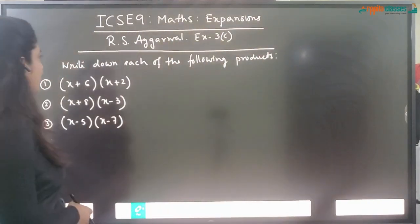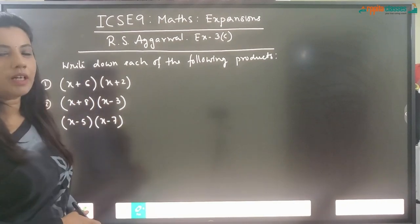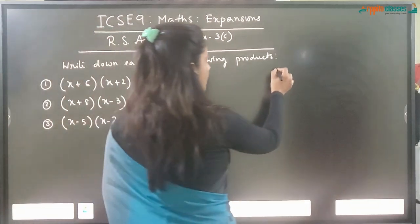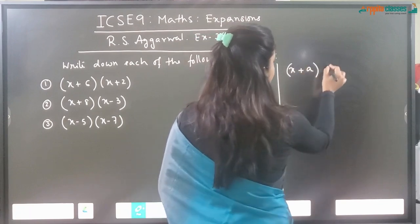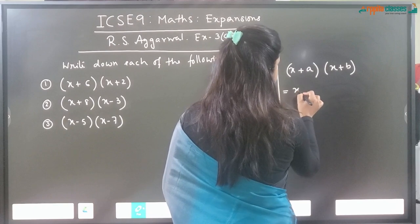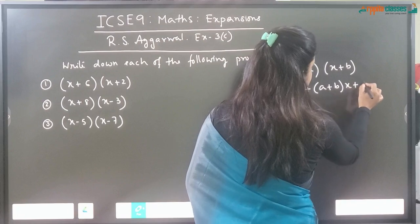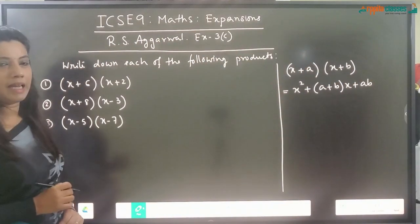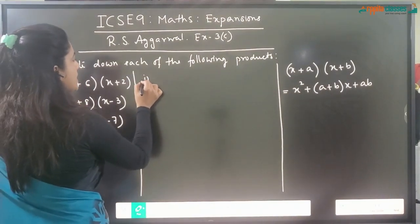Here we have to find out the products of two binomials. Let us first see the formula: when we have to find out the products of (x + a) into (x + b), the formula is x² + (a + b)x + ab. This is the formula for (x + a)(x + b). Now let us see how this formula is applicable while doing this type of sums.